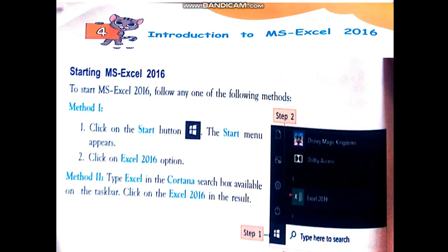Now, we see how to start MS Excel 2016. To start MS Excel 2016, two methods are there. The first method is, you click on the Start button and the Start menu appears. There, you click Excel 2016 option. The other method is, type Excel in the Cortana search box, which is available in the taskbar, and click on Excel 2016 in the result.